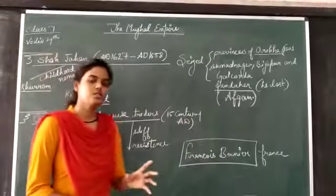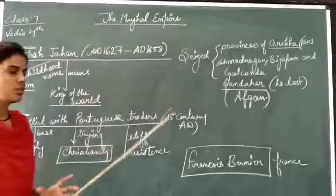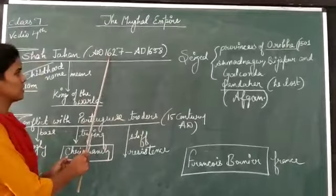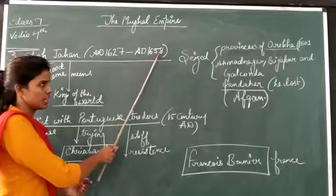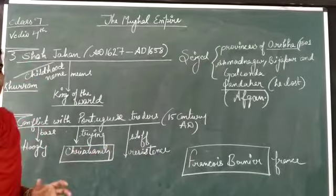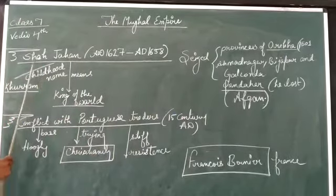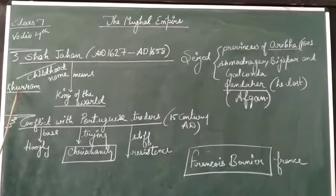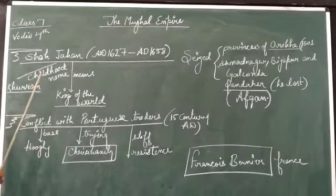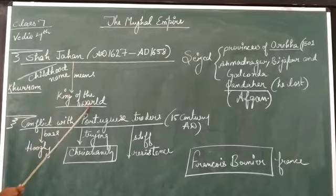In this video we are going to discuss about the Mughal Emperor Shahjahan. He ruled from AD 1627 to AD 1658, around 30 years he ruled over Delhi. His childhood name was Khurram, and when he came to rule he took the title Shahjahan, which means king of the world.